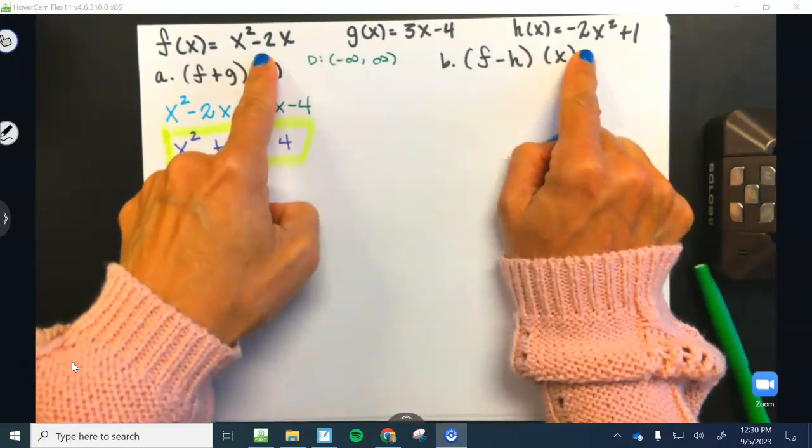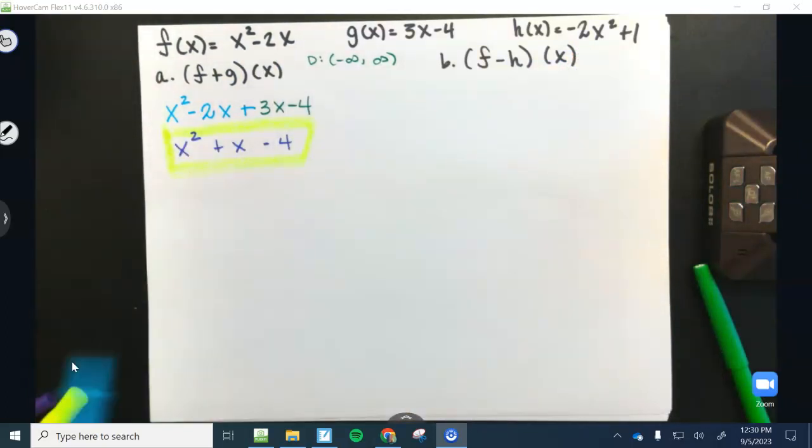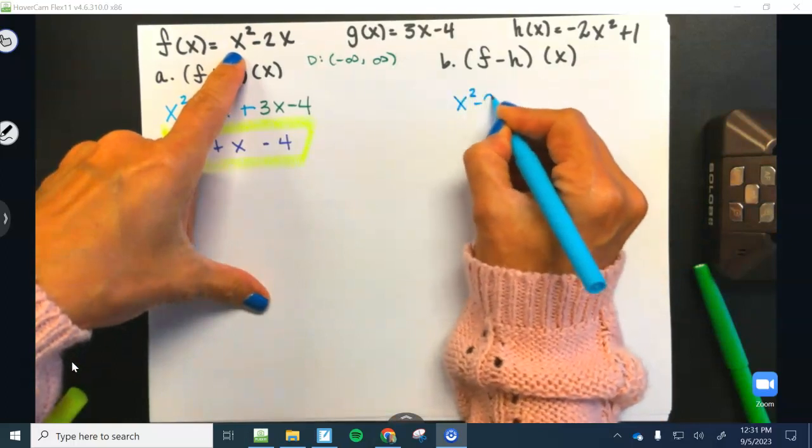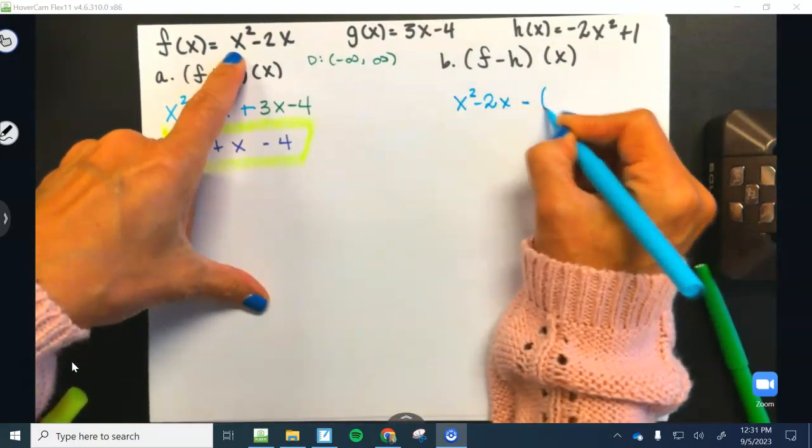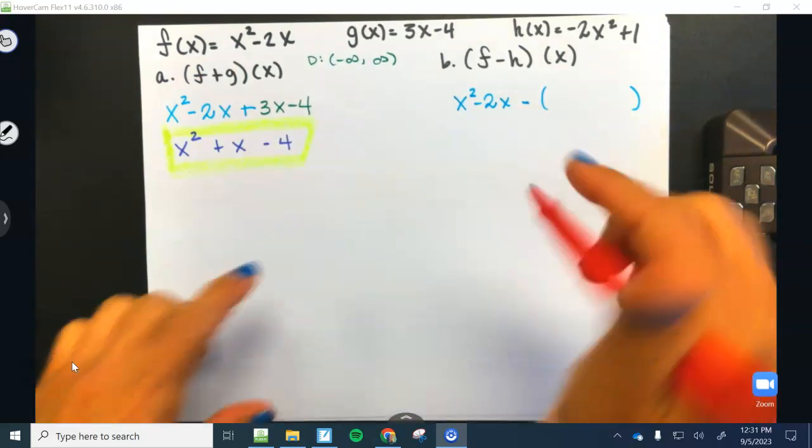All right, let's go ahead and subtract. We're going to subtract these two. So it is going to start out with f one more time. So x squared minus 2x minus. And then, of course, I'm going to drop h in the parentheses.